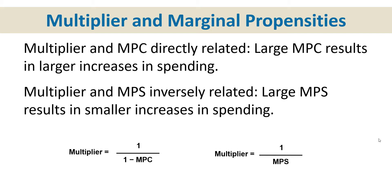Let's go back to the example of the government increasing GDP by building more schools. When they hire the contractor and the contractor pays the plumber — suppose the plumber doesn't want to consume that money. He doesn't buy anything with it; he saves it. What happens to the multiplier effect if he doesn't consume? It's dampened. Because remember, if people choose not to spend their income when it changes, the multiplier is going to be smaller. If people choose to save, the multiplier is smaller.